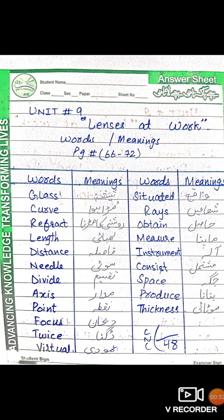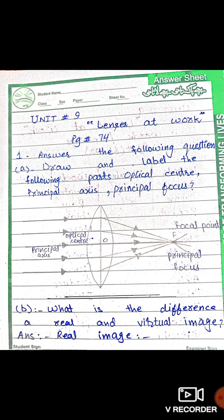Here are the meanings of unit number nine. Number one: glass — shisha kar muda hua; diffract — roshni ka murna; length — lambai; distance — fasla; needle — sui; divide — taksim; axis — madar; point — nokta; focus — dehaan; twice — dugna; virtual — amudi; situated — wakir; raise — shway; obtain — hasil; measure — mapna; instrument — alat; consist — mushtamil; space — jaga; produce — banana; thickness — motai.